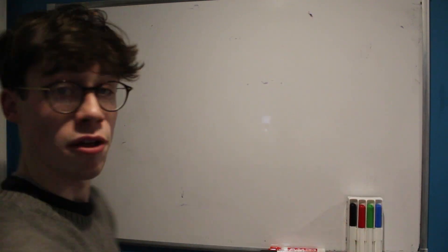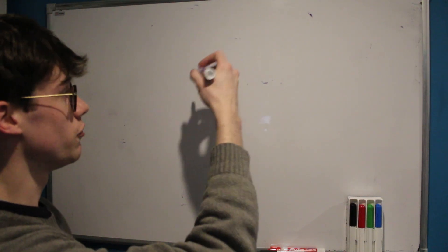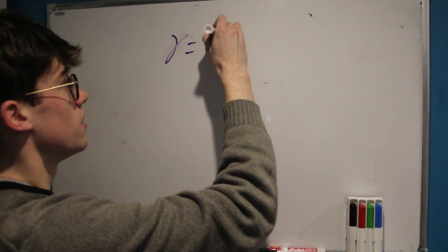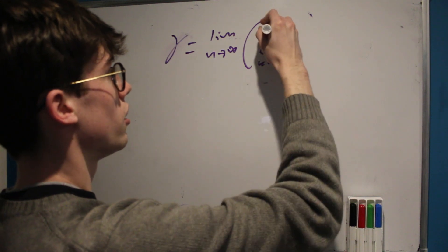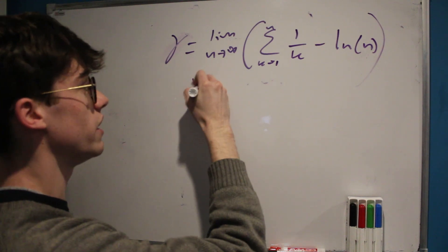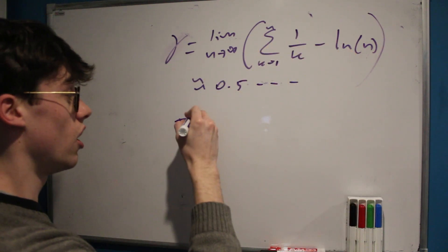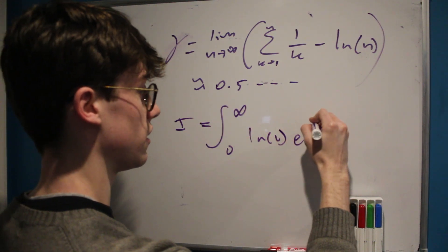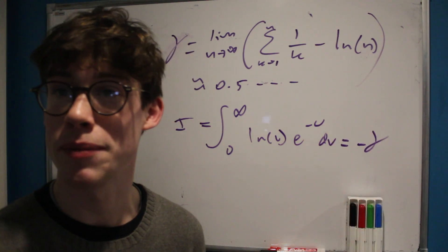The Euler-Mascheroni constant — which is covered in that video about the gamma function — is the limiting difference of the harmonic series and the natural log, and it's roughly equal to about 0.5 something. So therefore we've shown that I, which is the integral from zero to infinity of ln(v) times e to the negative v with respect to v, is equal to negative this beautiful mathematical constant.